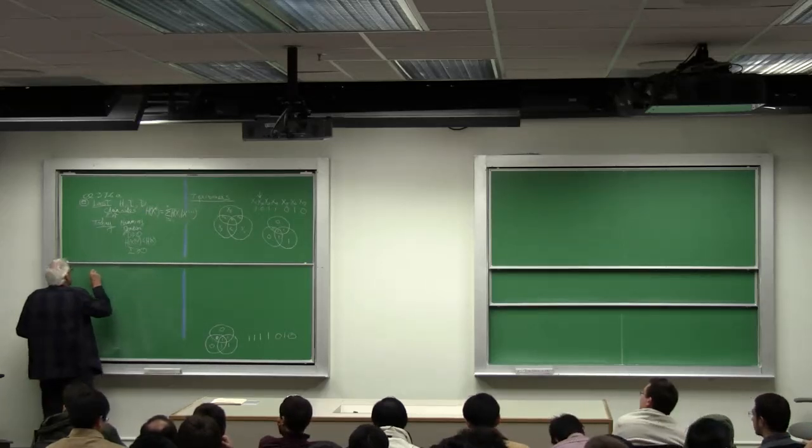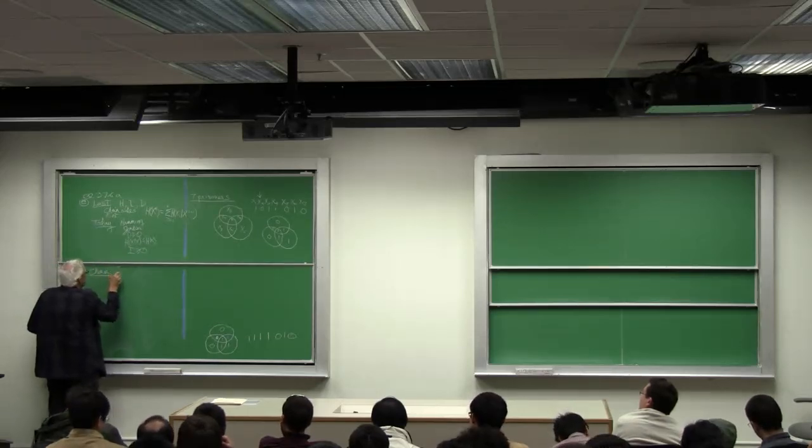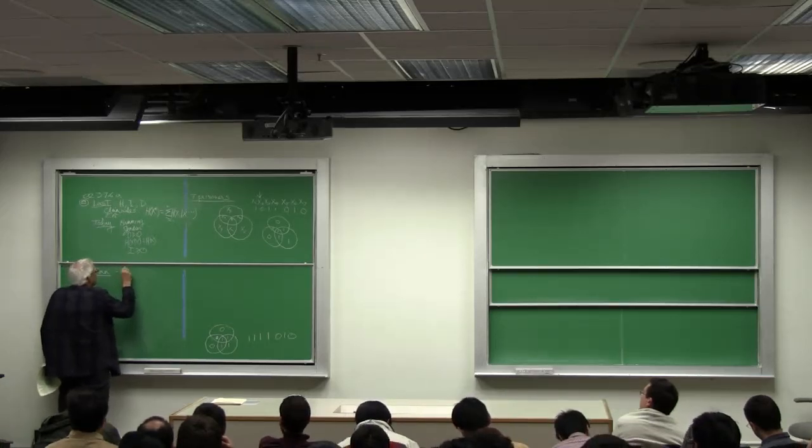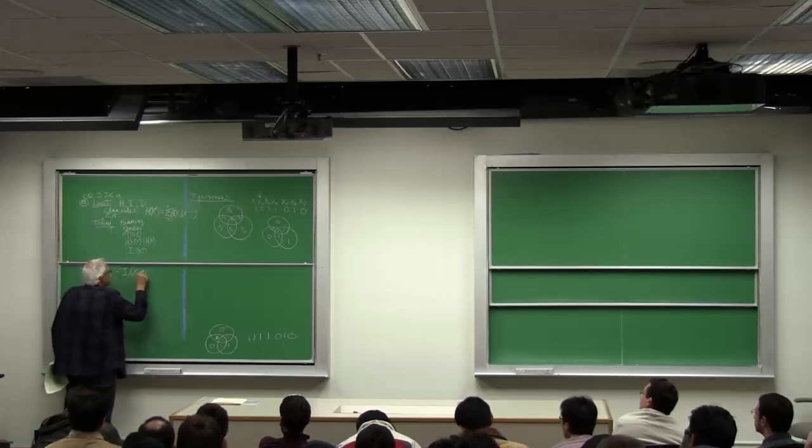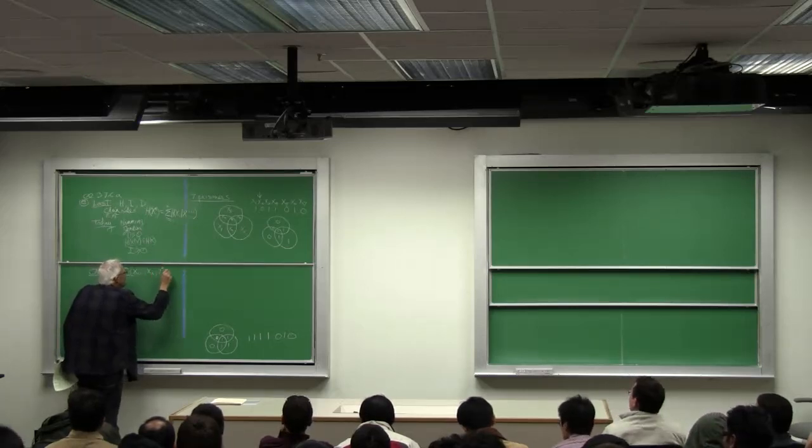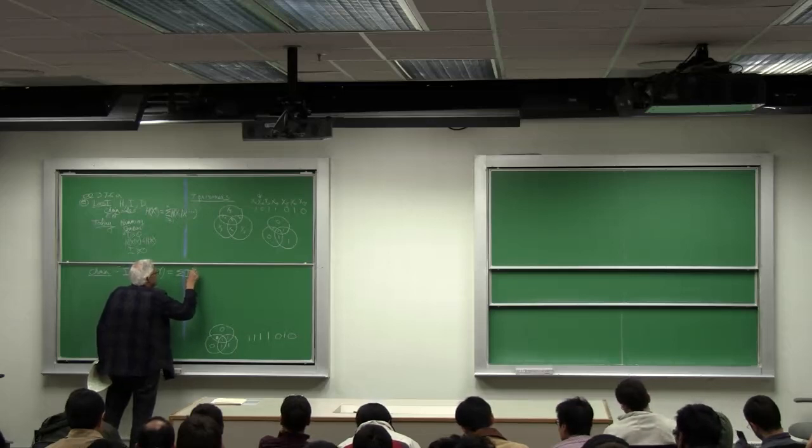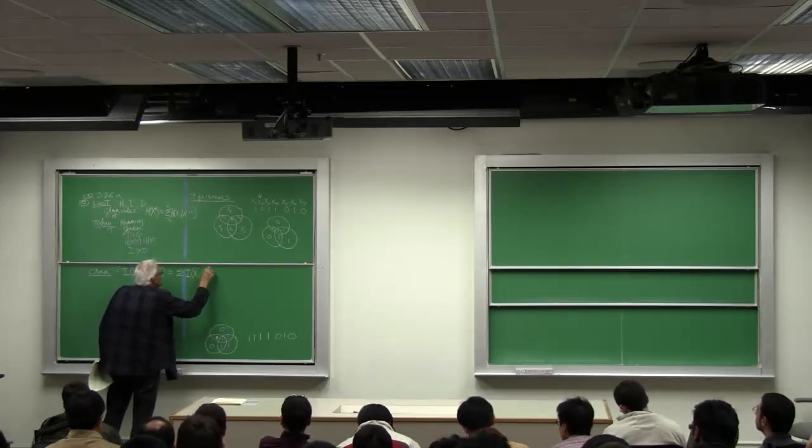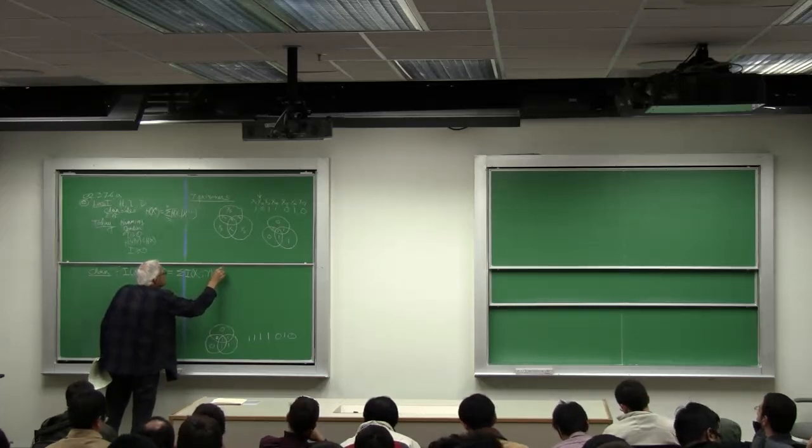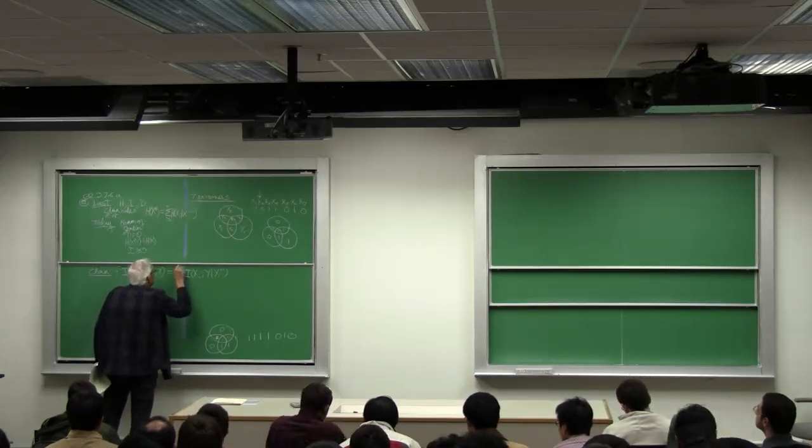Let me say something more about chain rules before we get into what's going on here. I want a chain rule for mutual information: x1 through xn and y. I want this to be summation of I of xi and y given the past, i equals 1 to n.